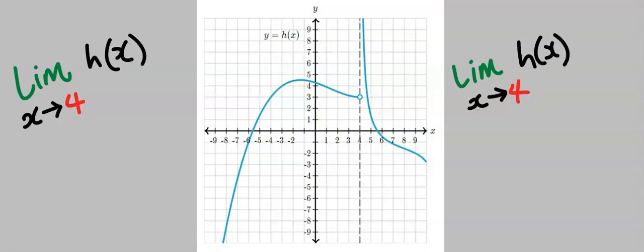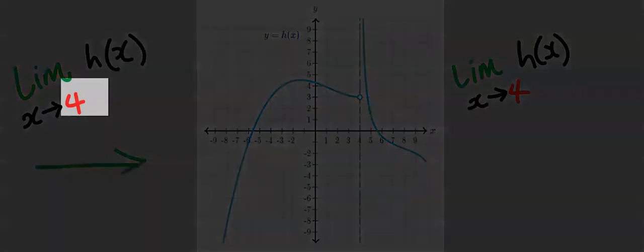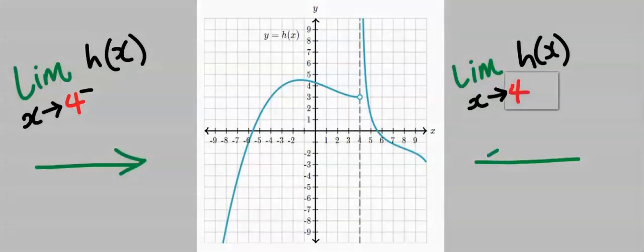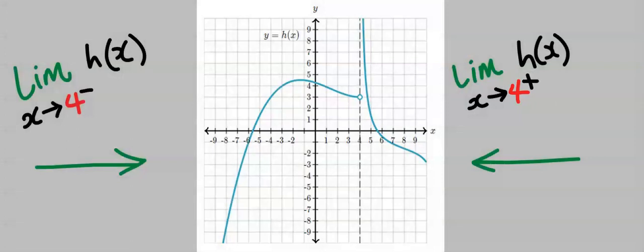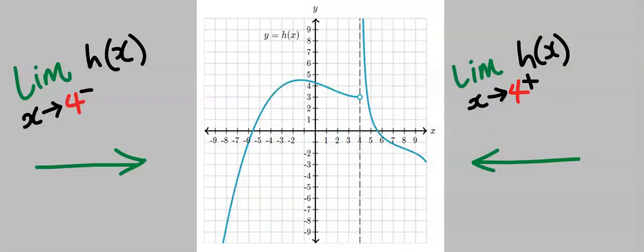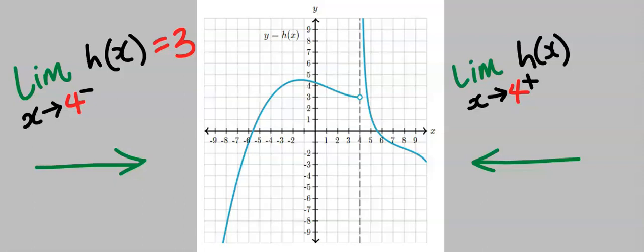We are going to approach this function from the left and from the right. From the left, ignoring the right-hand portion, the limit of h(x) as x tends to 4 from the left-hand side is 3.